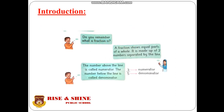Students, do you remember what a fraction is? A fraction shows two equal parts of a whole. It is made up of two numbers separated by a line. The number above the line is called the numerator and the number below the line is called the denominator. Here we have an example, 3 by 5: the 3 is called the numerator and the 5 is called the denominator.